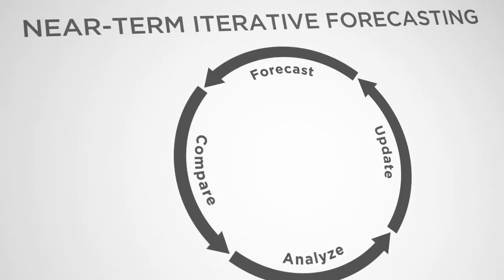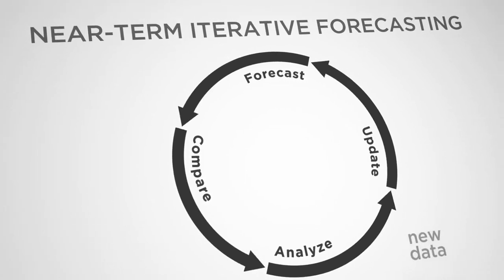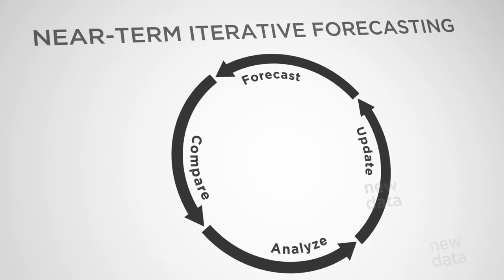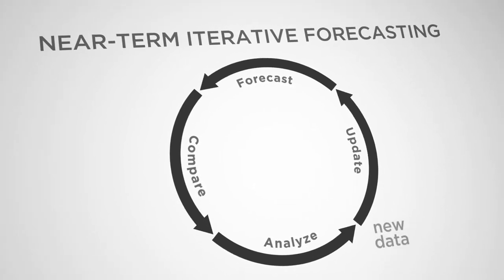What I want to introduce in this lecture is the idea of the forecast analysis cycle. The forecast analysis cycle is key to any time we want to do iterative forecasting, and it's based on the idea that when we make forecasts and new information becomes available, we want to be able to update those forecasts iteratively. So we'll be making a forecast, we'll get some new observations, and we want to update that forecast and then forecast again.